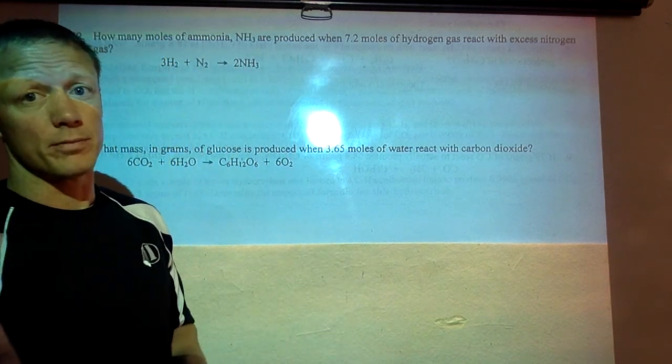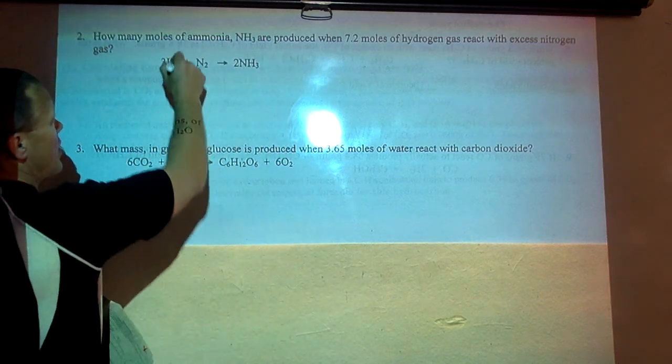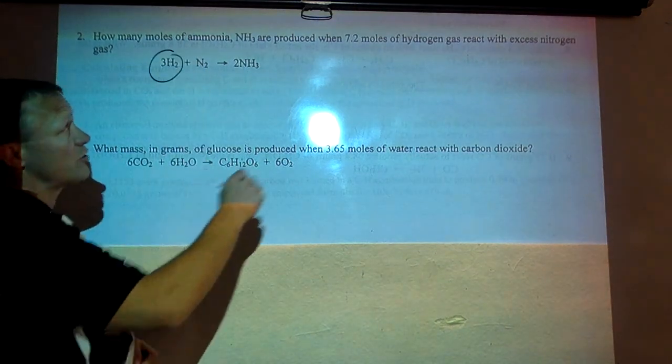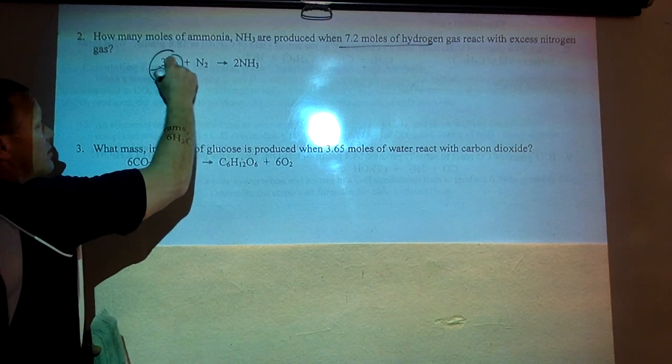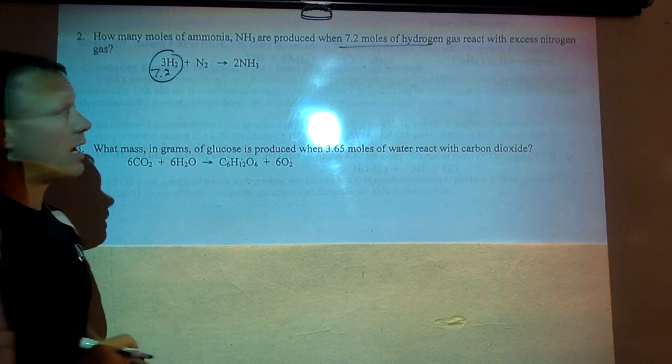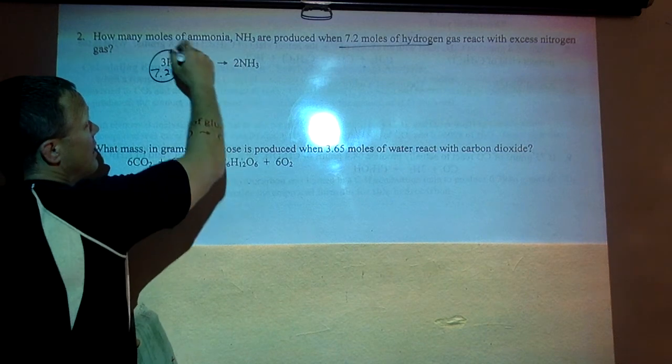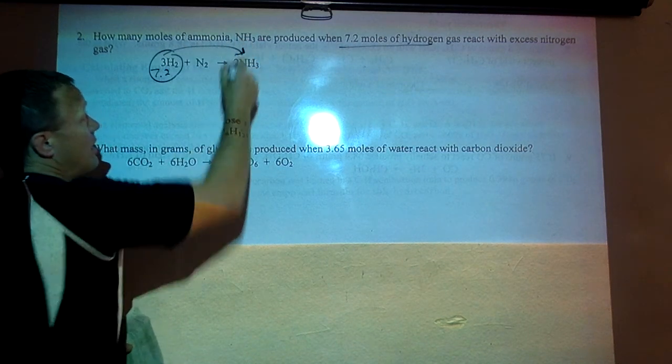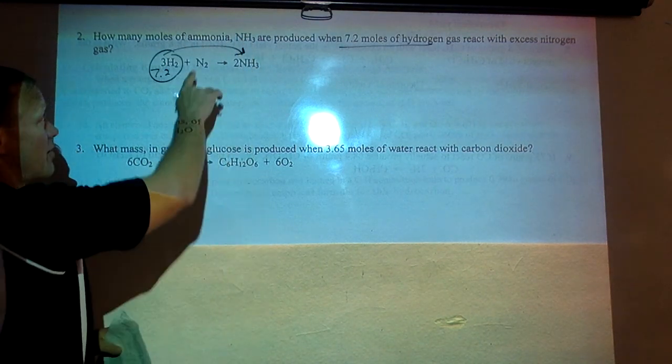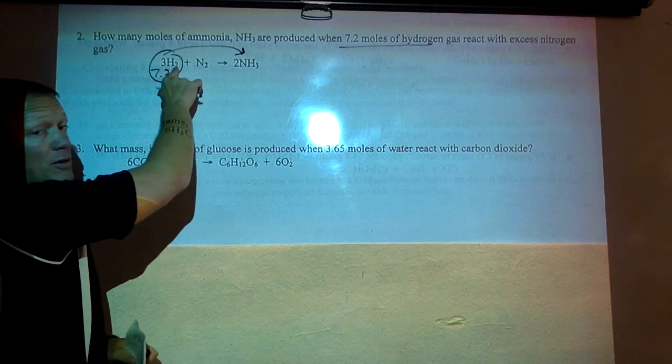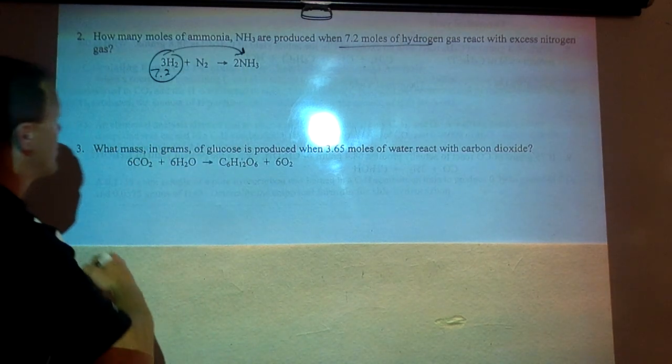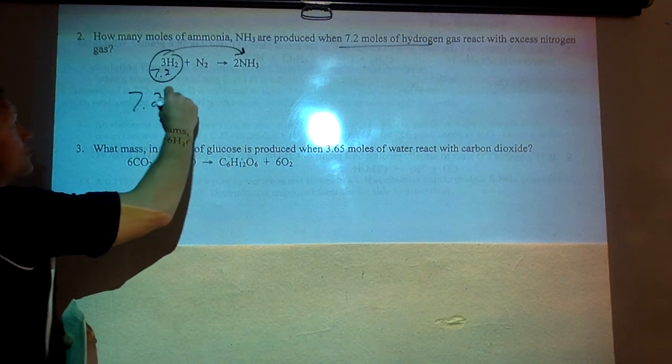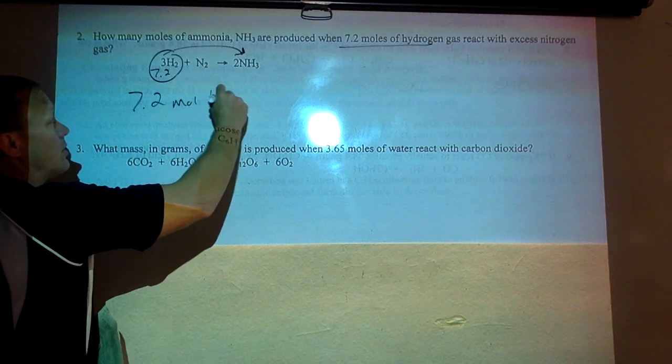So first one is a moles to moles problem. You're starting off with 7.2 moles of hydrogen. We got 7.2 moles of that and it's working to moles of NH3. It could have asked you how much nitrogen was used with this but it's saying if you use that much hydrogen how much NH3 was produced in this reaction.